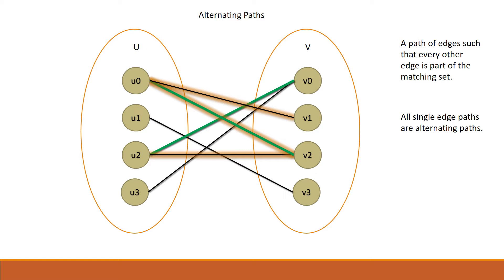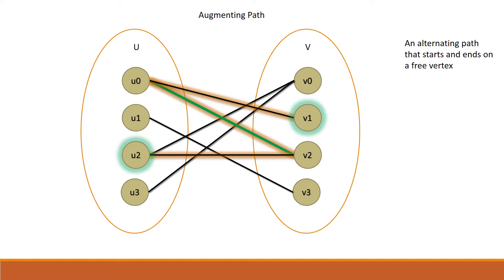An alternating path is a path of edges such that every other edge is part of the matching set. All single edge paths are alternating paths. A special case is an augmenting path, which is an alternating path that starts and ends on a free vertex. The path shown here is not an augmenting path as U2 is part of the matching set. This is an augmenting path because U2 and V1 are both free vertices.